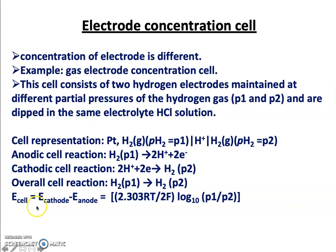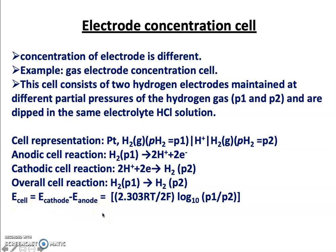The EMF of the cell is written as E_cathode minus E_anode, which equals 2.303 × RT / (2F) × log(P1/P2). The transfer of hydrogen gas from one electrode to another is responsible for the EMF. When P1 is greater than P2, the E_cell is positive. Hence, the electrode with higher pressure is made the anode and the electrode with lower partial pressure is the cathode.